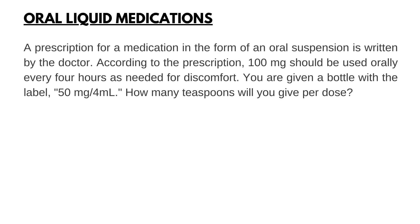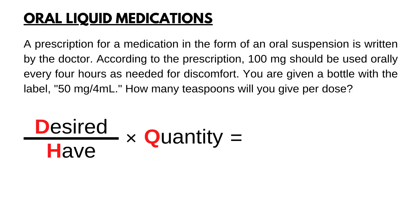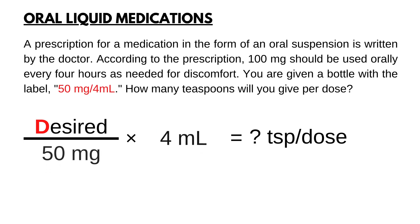A prescription for a medication in the form of an oral suspension is written by the doctor. According to the prescription, 100 mg should be used orally every 4 hours as needed for discomfort. You are given a bottle with the label 50 mg per 4 ml. How many teaspoons will you give per dose? First, set up the formula desired over have times quantity. Add the unit answer teaspoons per dose. Start with have and quantity: 50 mg per 4 ml.